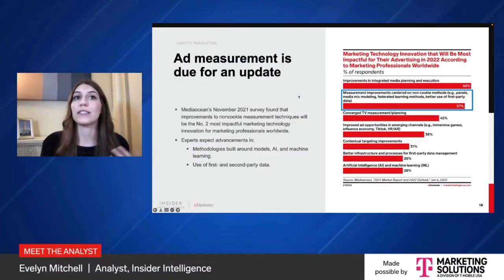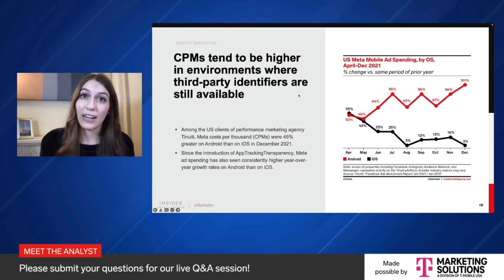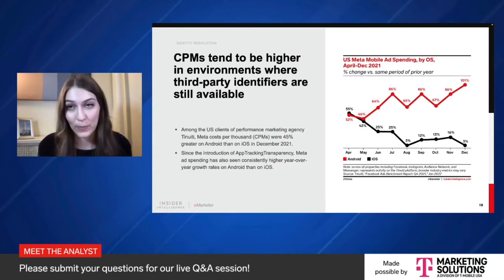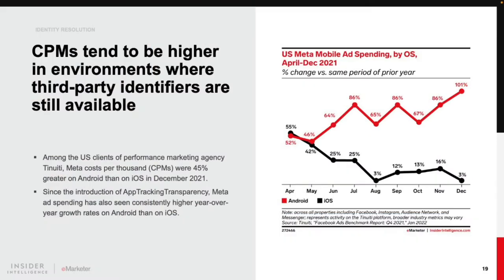How does all of this influence costs? CPMs tend to be higher in environments where third-party identifiers are still available for targeting and measurement. We see this play out on browsers — impressions on Chrome are more expensive than on Safari or Firefox — and we see it on mobile. iOS devices are subject to Apple's App Tracking Transparency framework, and as of December, opt-in rates sit at about 37% according to AppsFlyer data, meaning almost two-thirds of iOS users are not trackable. Cross-app tracking is still relatively widespread on Android devices. Among U.S. clients of performance marketing agency Tenuity, Meta CPMs were 45% greater on Android devices than on iOS devices in December 2021.